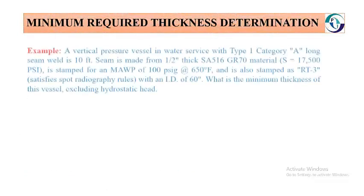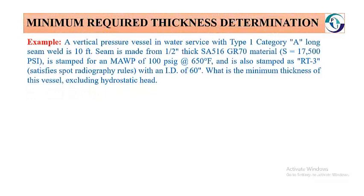To have a proper understanding, we will use an example. A vertical pressure vessel in water service with a Type 1 Category A long seam weld. The seam is made from half-inch thick SA-516 Grade 70 material, and the S value given is 17,500 PSI. It is stamped for a maximum allowable working pressure of 100 PSI at a temperature of 650°F, and is also stamped as RT3, which satisfies the spot radiography category.